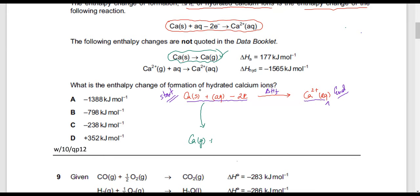I'm going to change calcium solid to calcium gas and keep the rest of the things exactly the same — not touching them. In this tiny step I've only changed calcium solid to calcium gas. The enthalpy change for calcium solid changing into calcium gas is 177 kJ/mol. I've connected this equation.